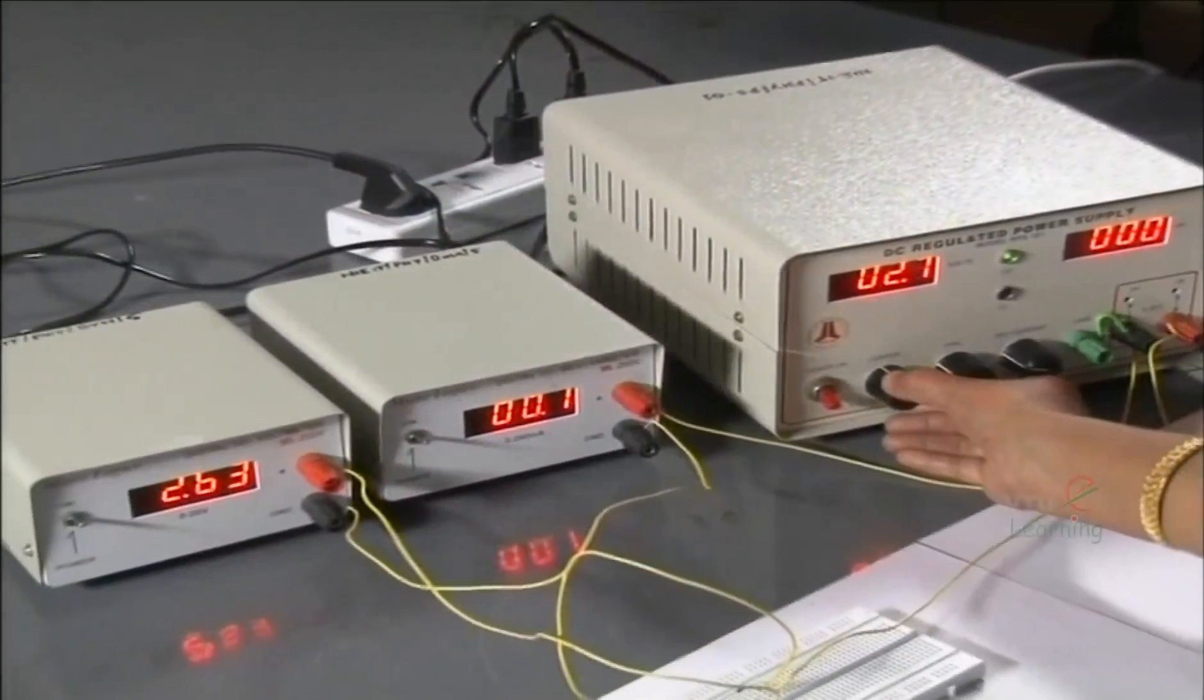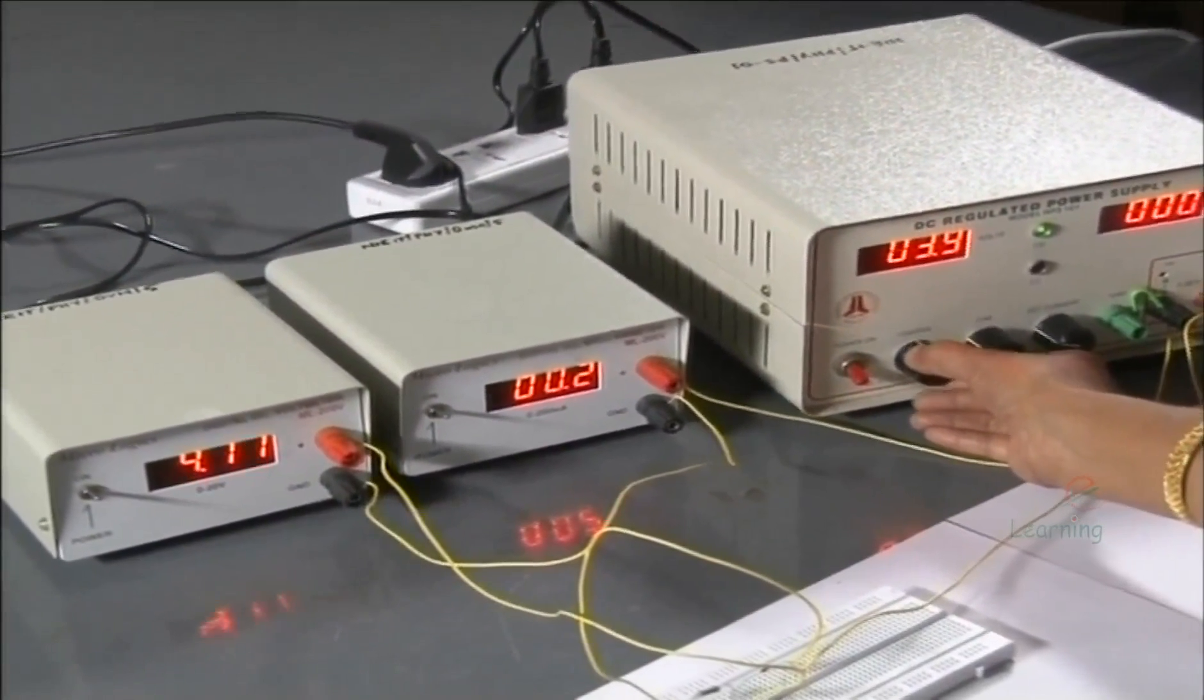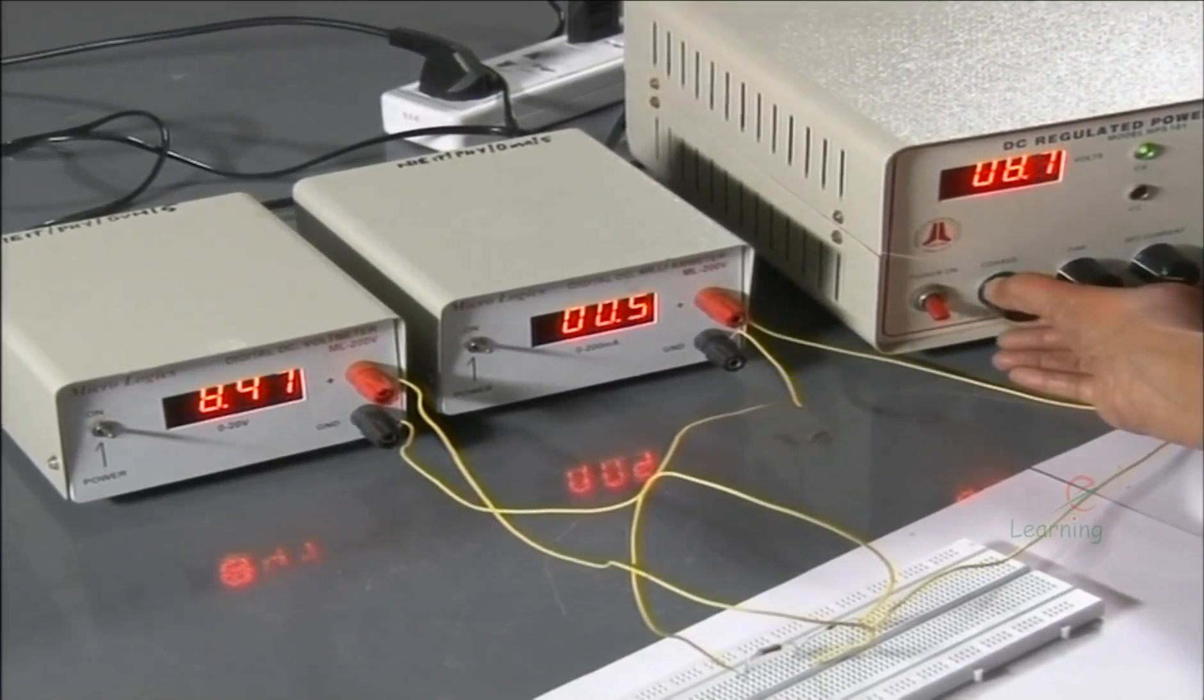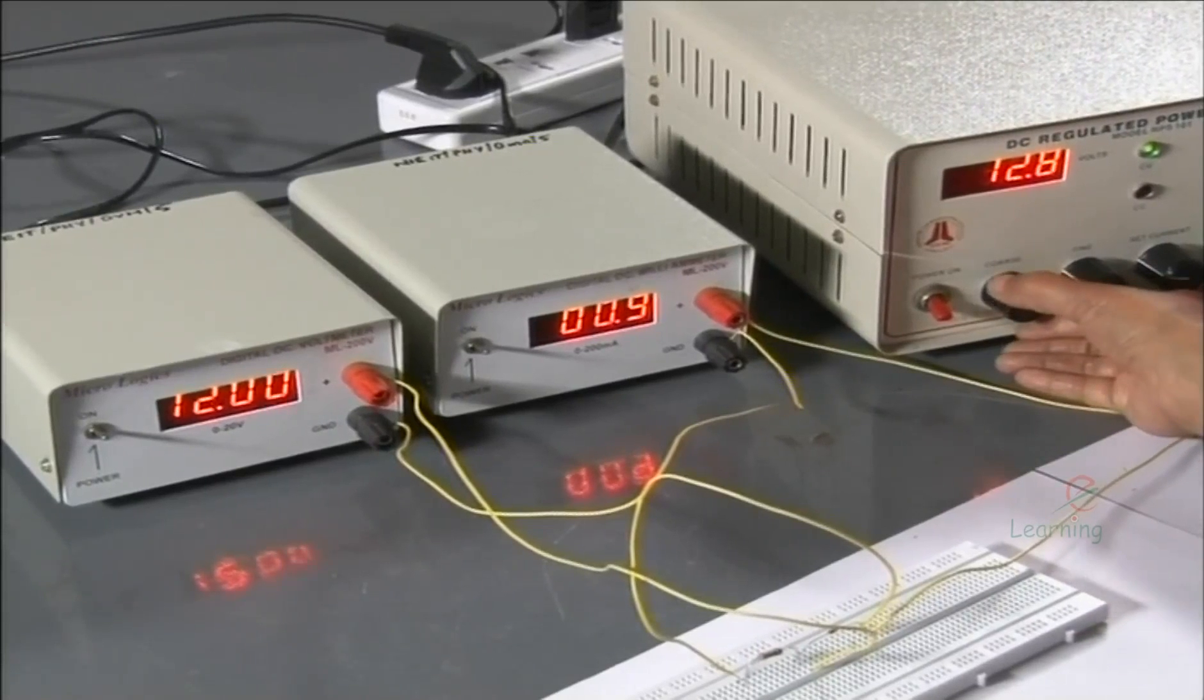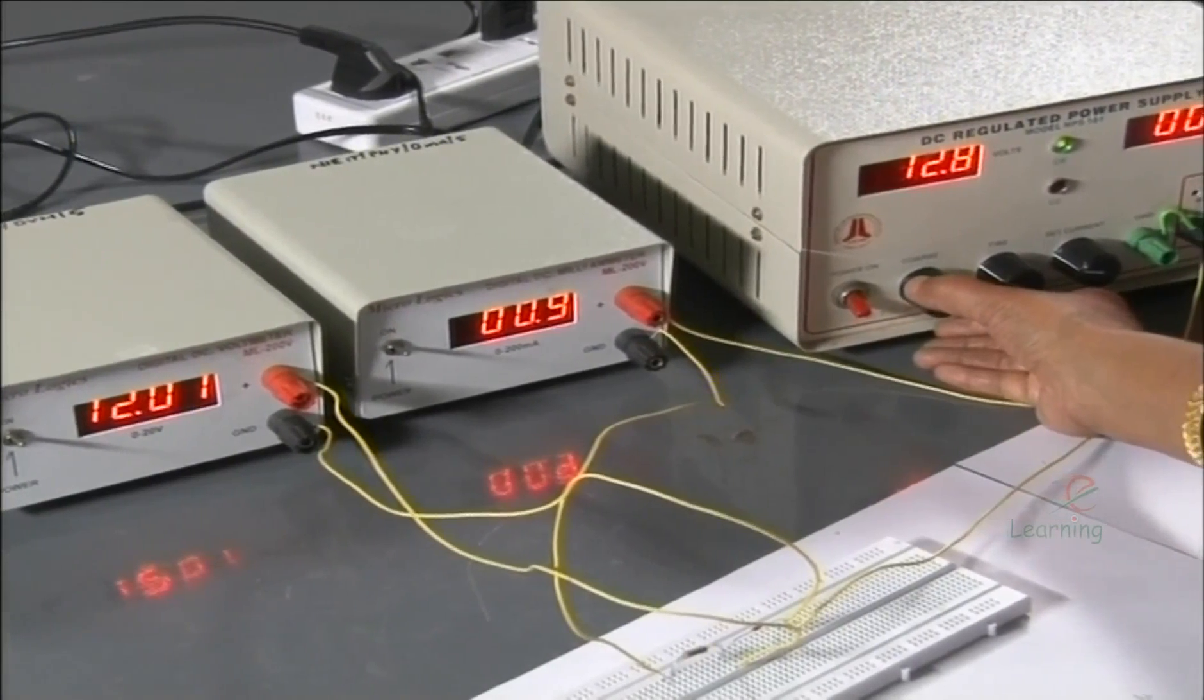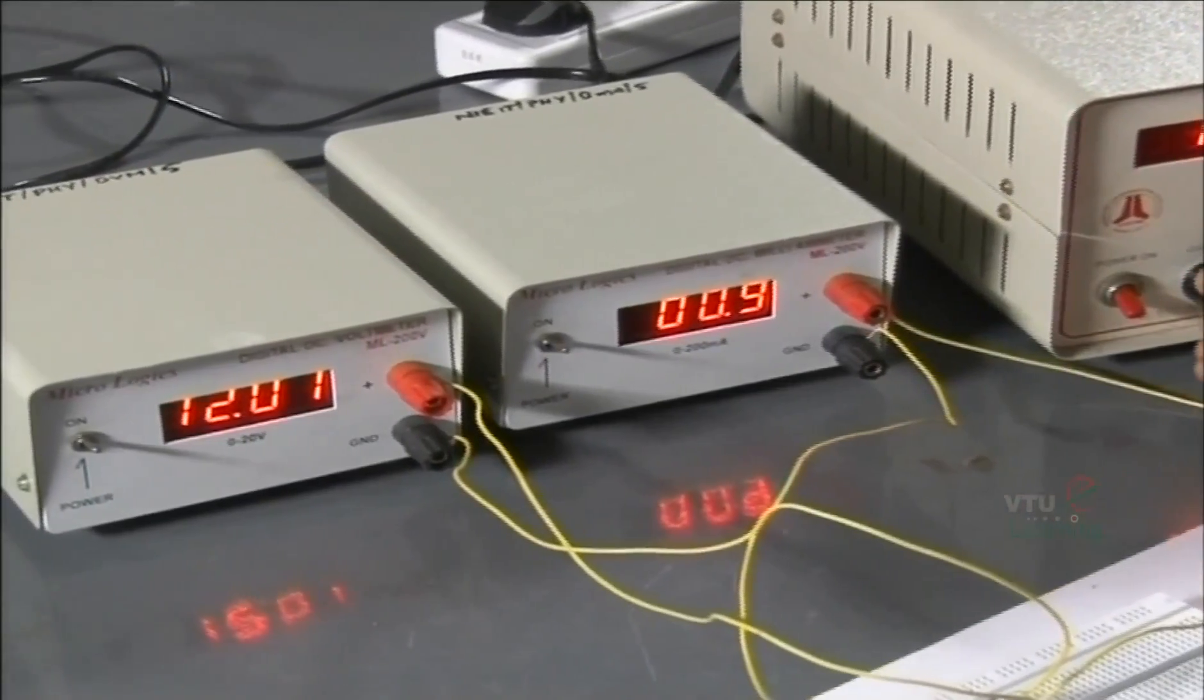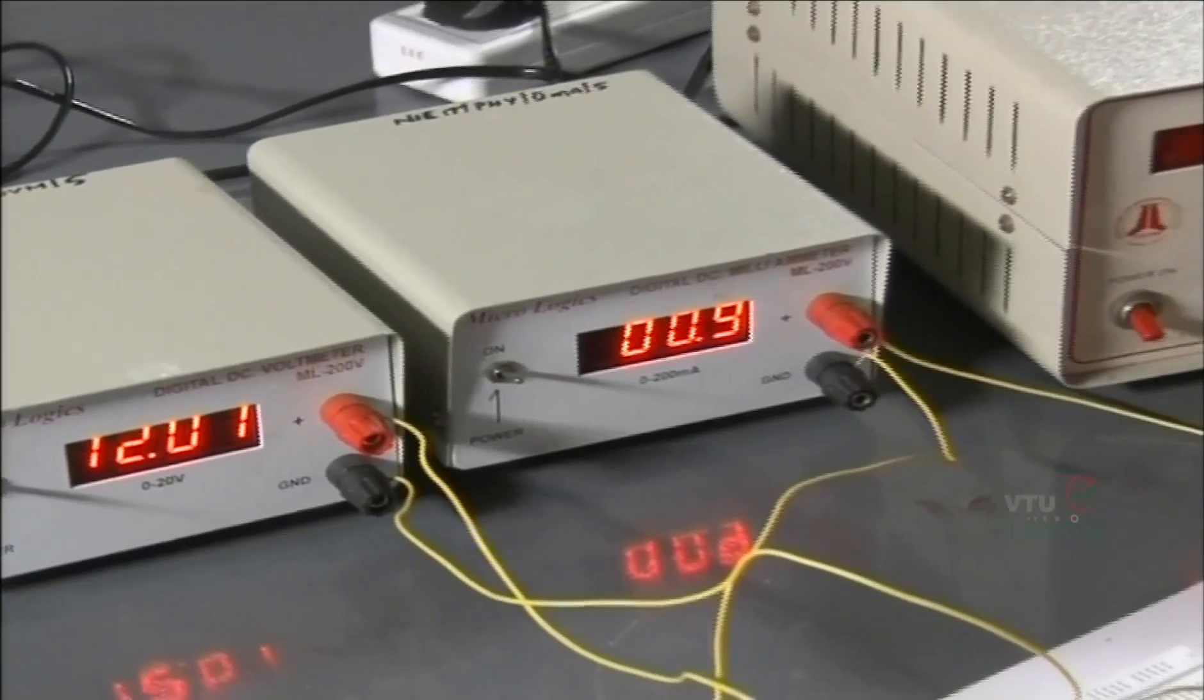You observe that for lower voltages, 1 volt, 2 volt, the current through the junction remains almost same, 0.2 milliamps, 0.3 milliamps and so on. At 12 volts, you observe that the current through the junction is 0.9 milliamps increasing in steps of 0.1.